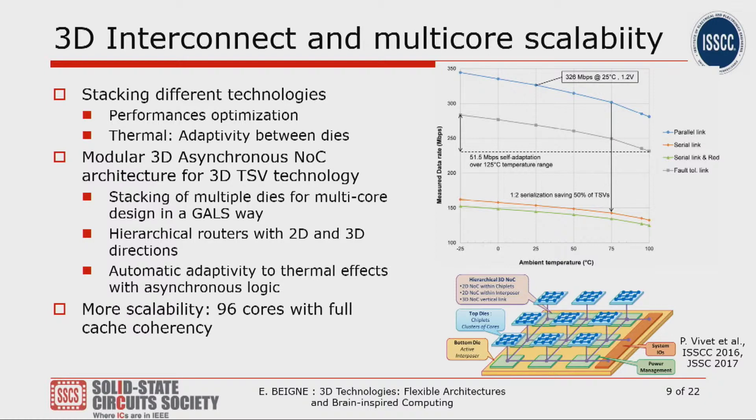This approach brings more scalability — we can think about a high number of cores, and we have already demonstrated 96 cores. Full cache coherency is needed to have a truly flexible system, but the number of cores achievable in a multi-core architecture is increasing significantly.